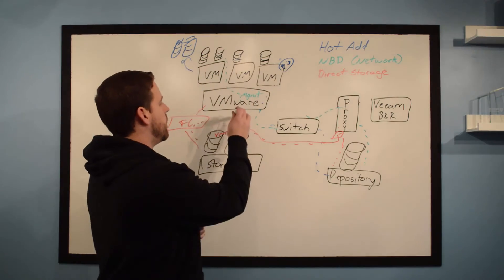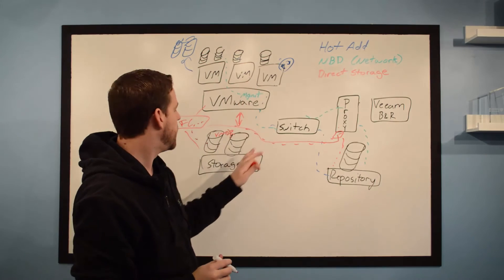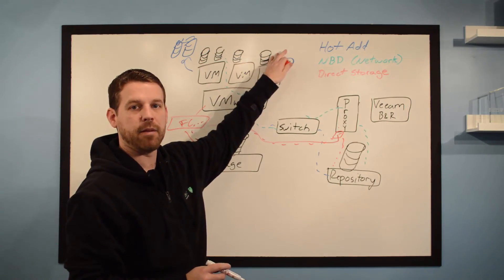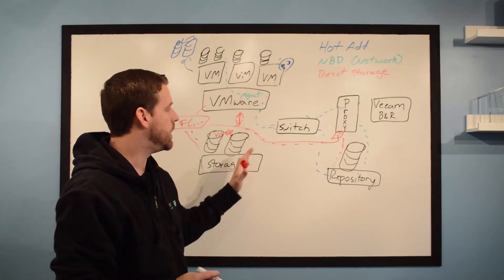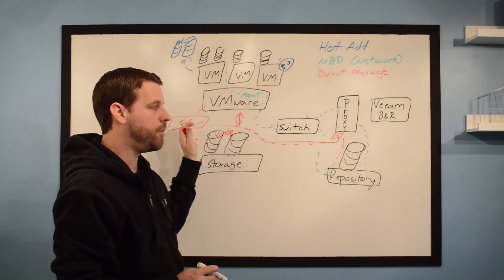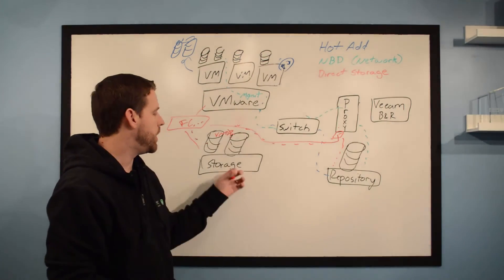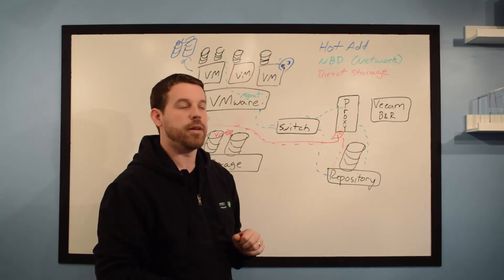With the other two modes, we're reading data between VMware and the storage, right? Because in hot add mode, we've hot added the VMDK file, so we have to read it up through the stack. With network mode, we're reading the disks up to the VMware stack and out. In this mode, we don't have any of that. Instead, we're grabbing it all here, which means there's no additional load on your VMware environment.